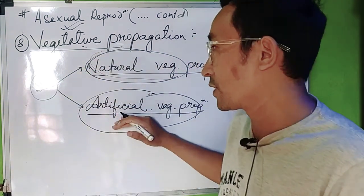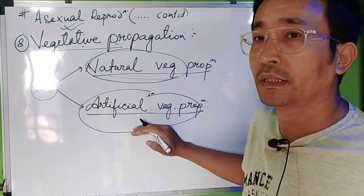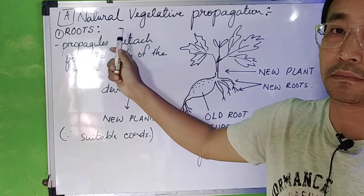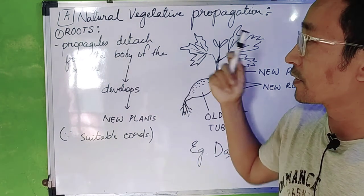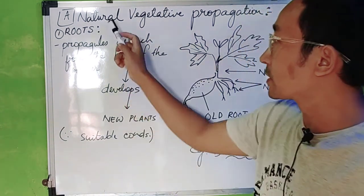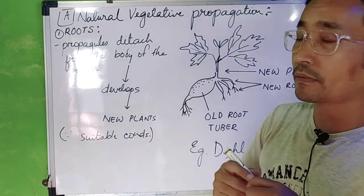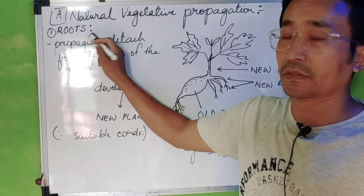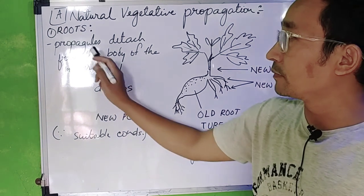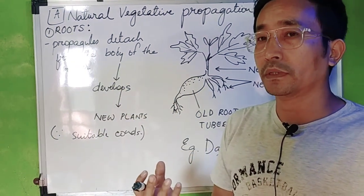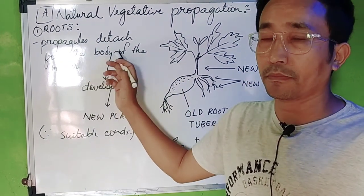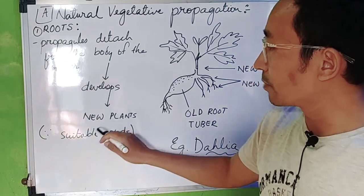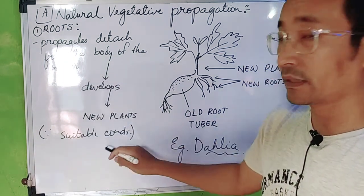So we will look into it one by one. Next, natural propagation — it may be by roots, it may be by stems, it may be by leaves, it may be by root propagules. So it will develop into a new plant under suitable conditions.